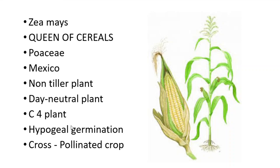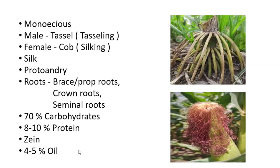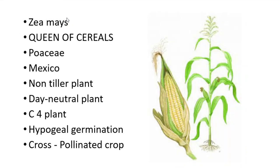The germination found in maize seeds is hypogeal germination, where the cotyledons remain inside the soil. It is a cross-pollinated crop. An important characteristic is that maize is monoecious — the male part and the female part of the plant are in two different places but on the same plant.